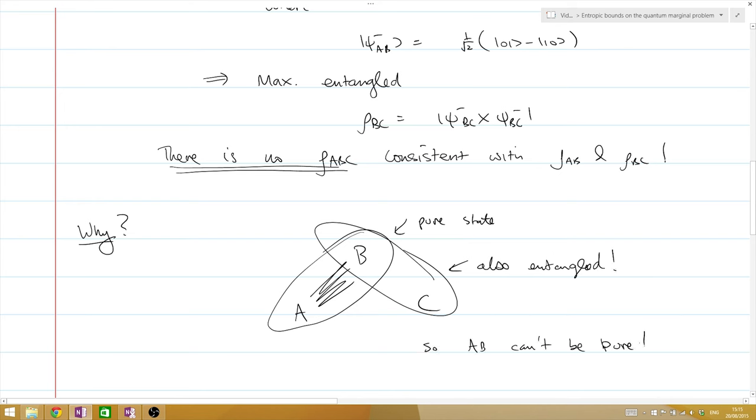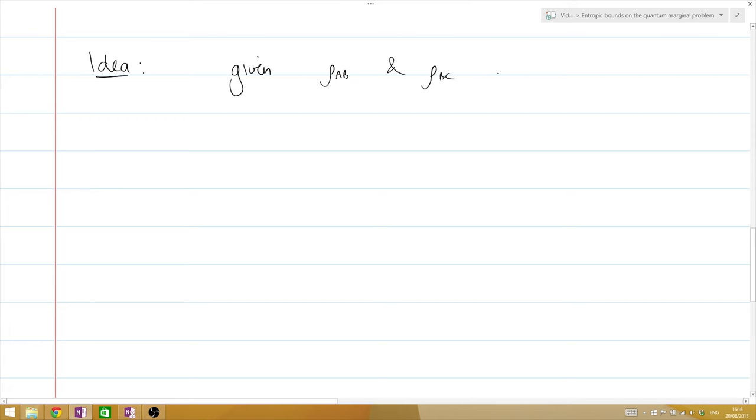We come now to the idea behind the contribution of this paper. So given rho AB and rho BC, we're going to look for bounds on the total number of solutions of the quantum marginal problem in terms of just information we can get easily from rho AB and rho BC.